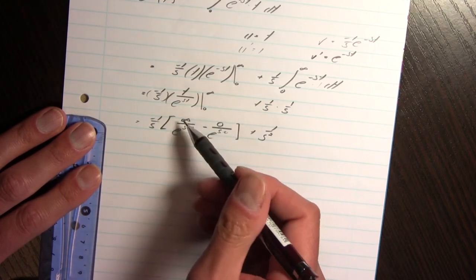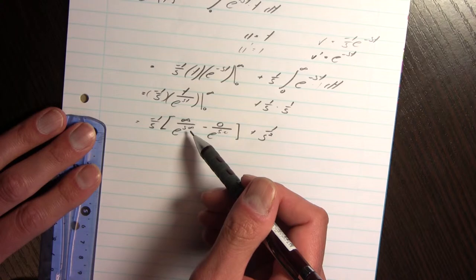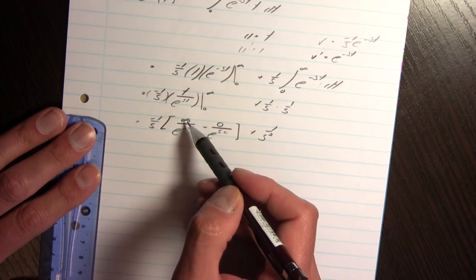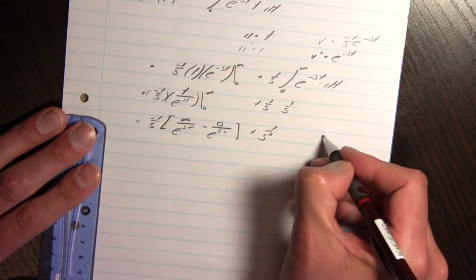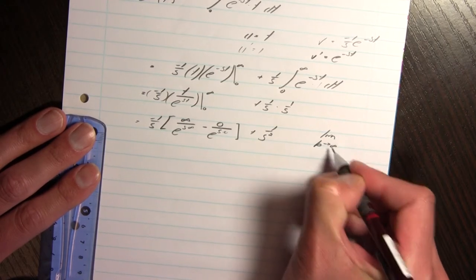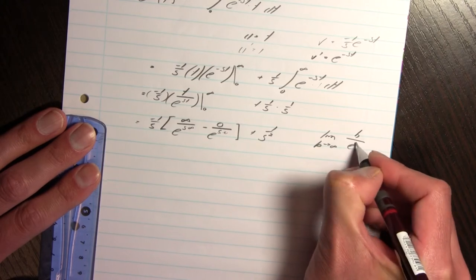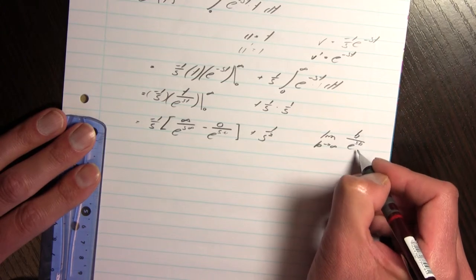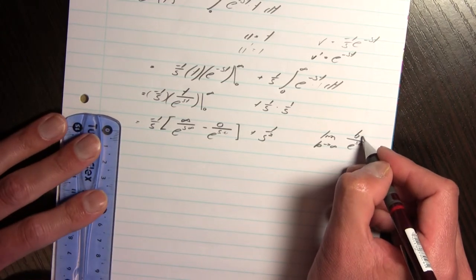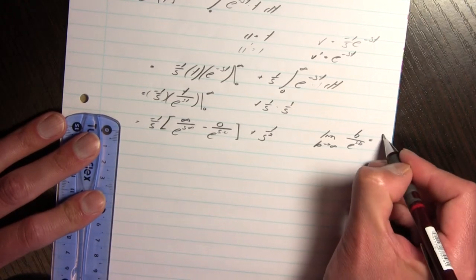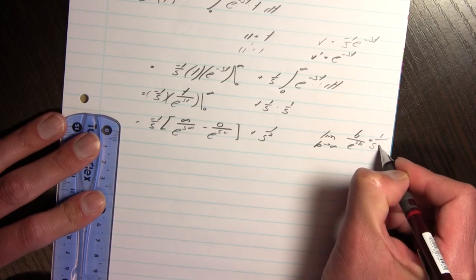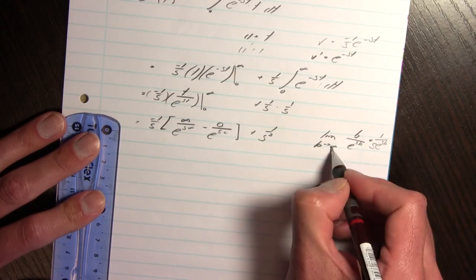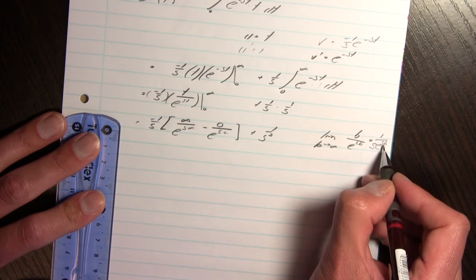Now this is indeterminate form because I have infinity divided by infinity. But remember this was actually a b. It was actually the limit as b goes to infinity of b over e to the power sb. And if I put in the limit there it would be infinity divided by infinity indeterminate form. So I take independently the first derivative of both. That would have left me with 1 over s times e to the power sb. And if I now slip in infinity there it's 1 over infinity that's 0.